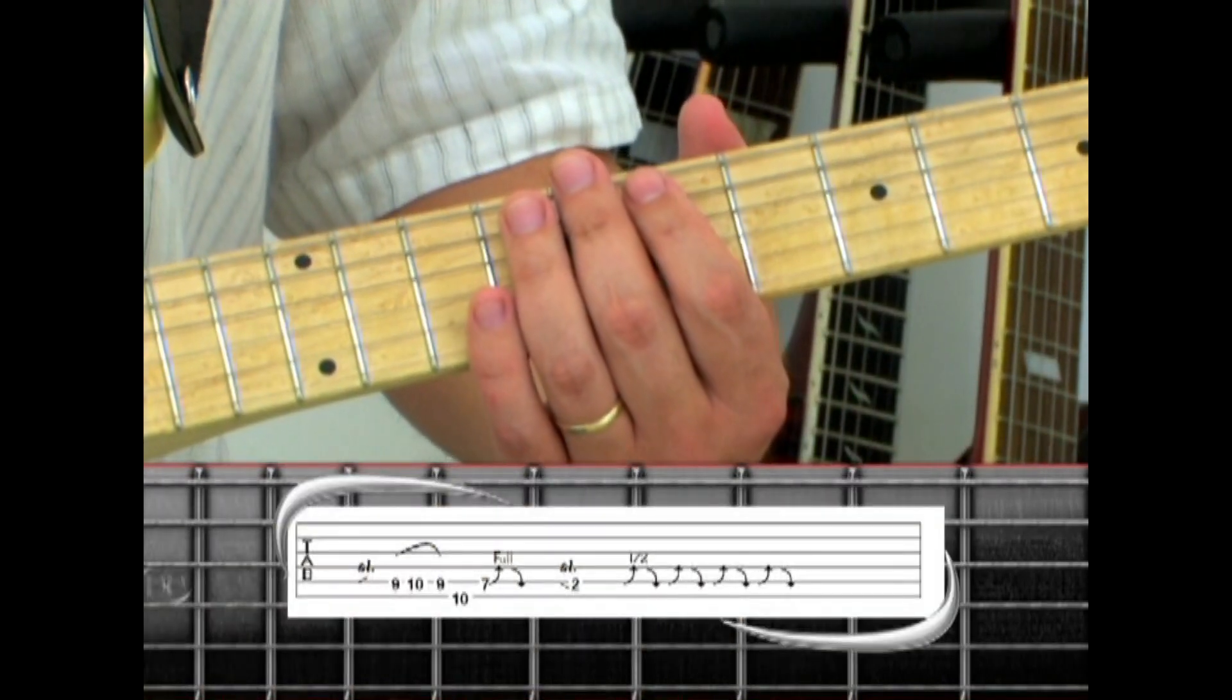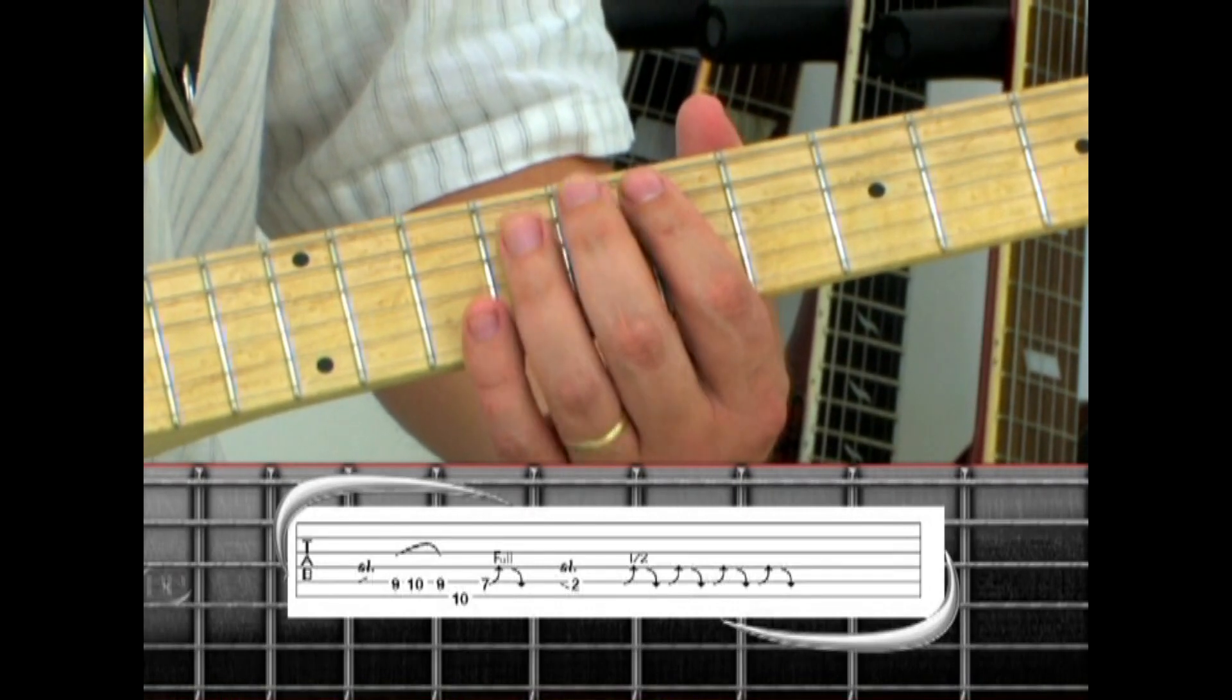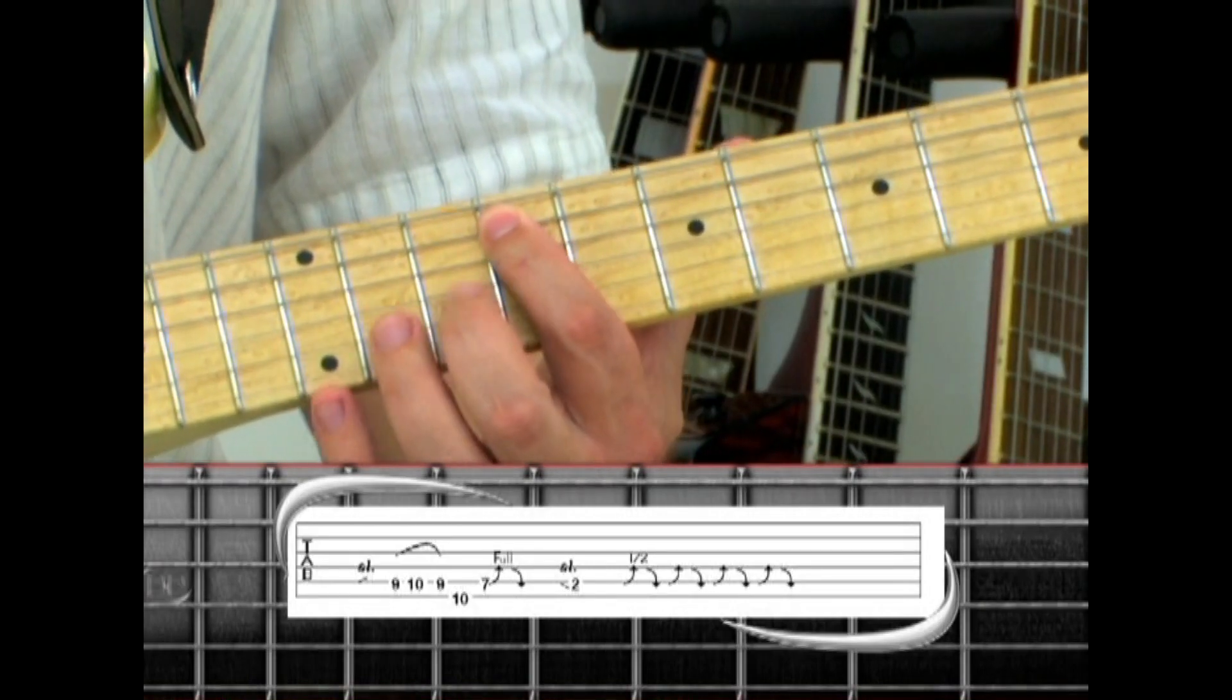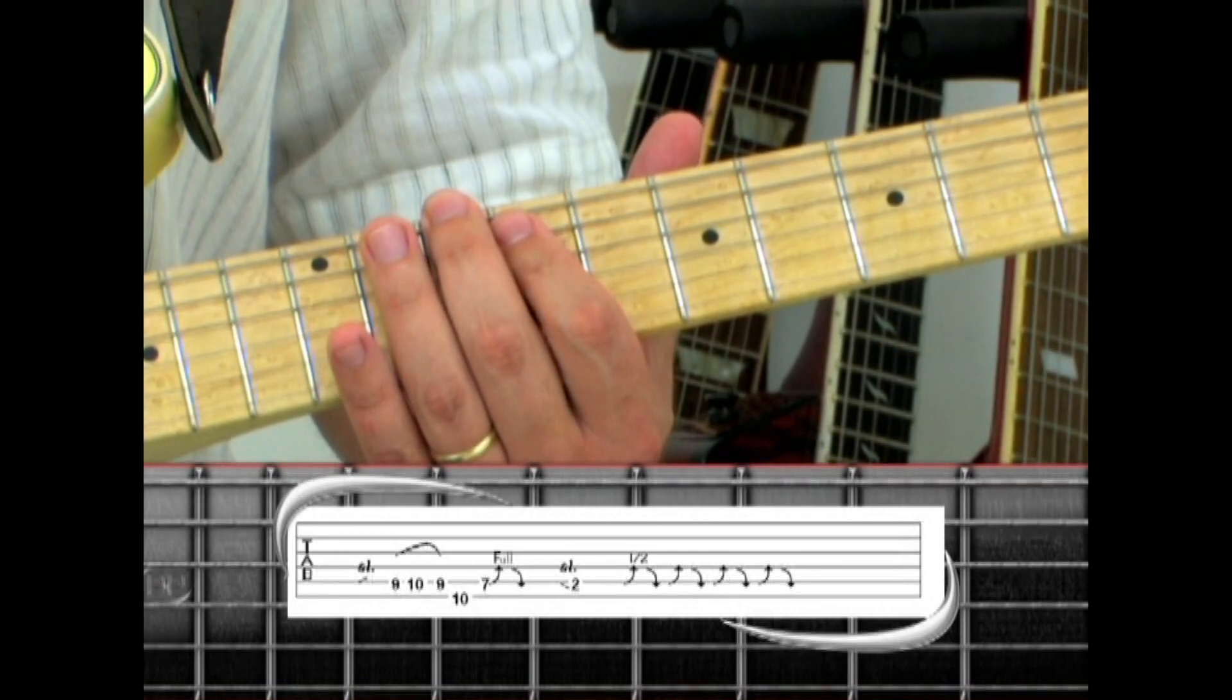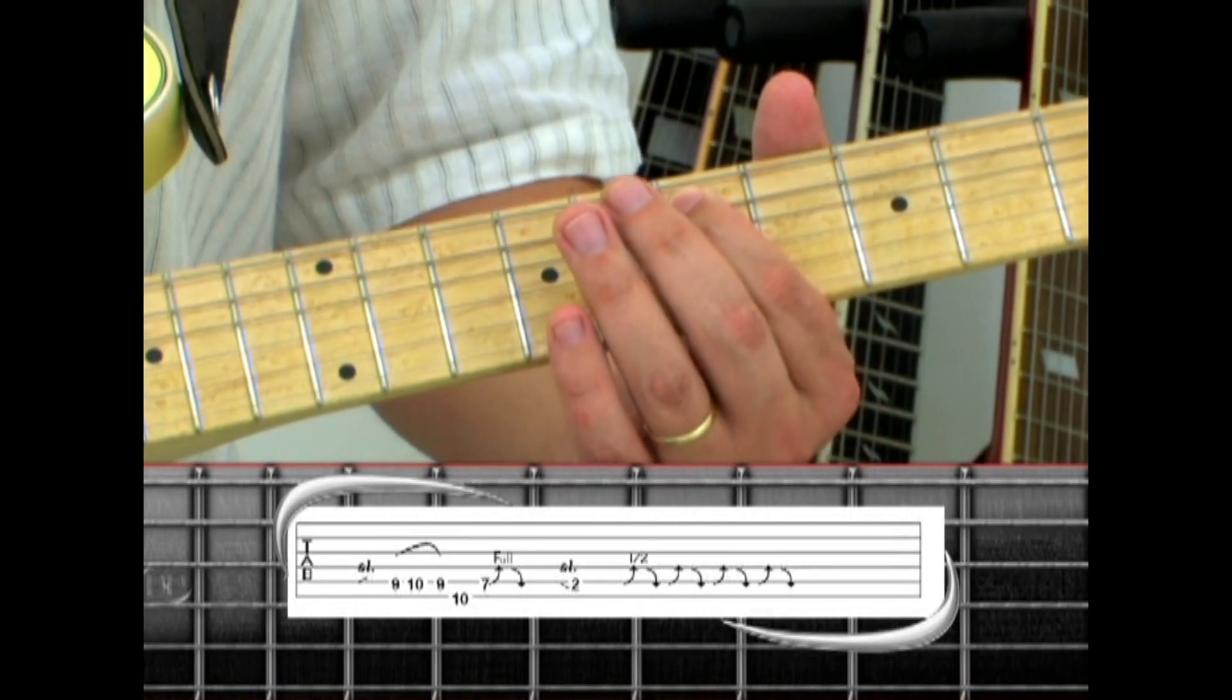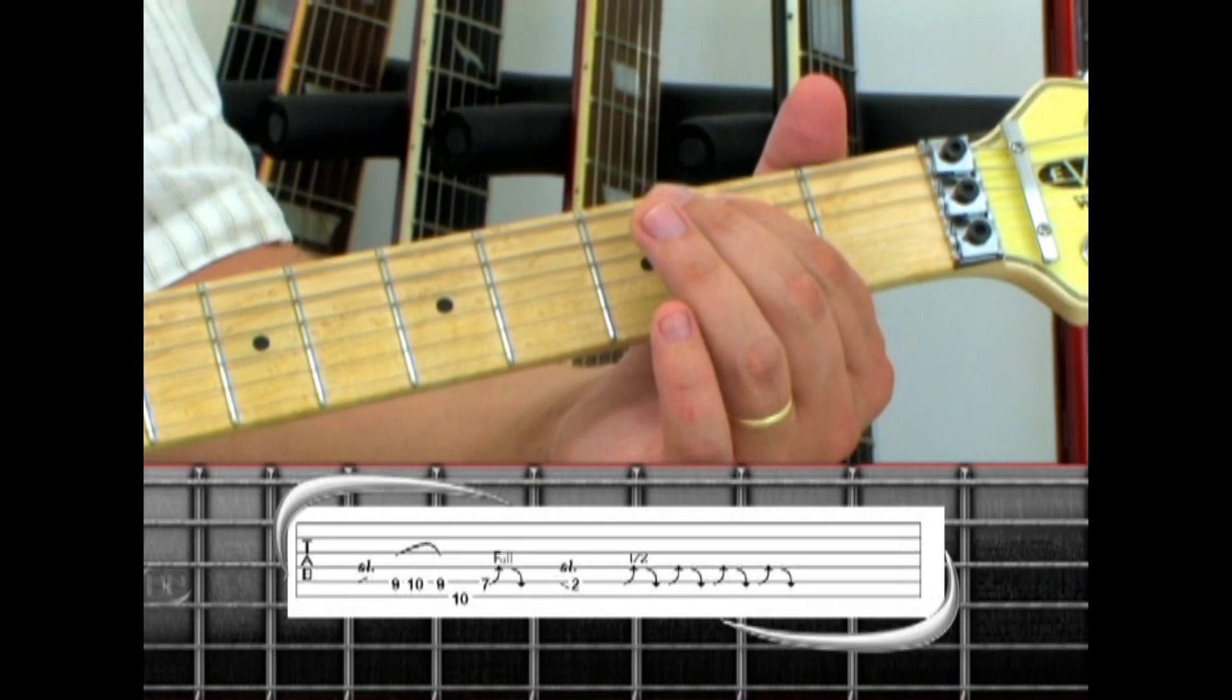Immediately after the solo, phrase 12 introduces the halftime section by sliding the index up the 5th string to the 9th fret. Hammer to 10, pull to 9, 6th string 10, to 5th string 7 with a bend and release, slide down to 2, then bend and release 4 times.